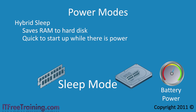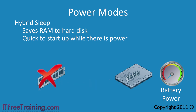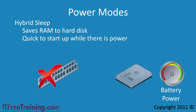While in sleep mode, if the power runs out, the contents of RAM will be lost. If the computer is then started up after power is lost, the contents of RAM will be read from the hard disk. Hybrid sleep gives you the advantages of both sleep and hibernation mode.